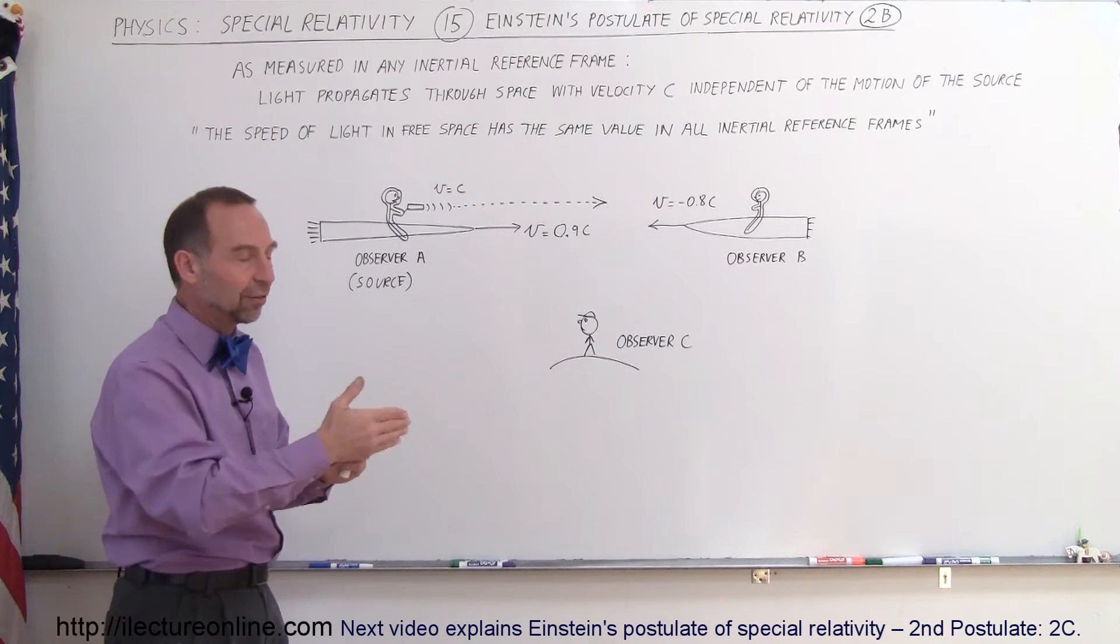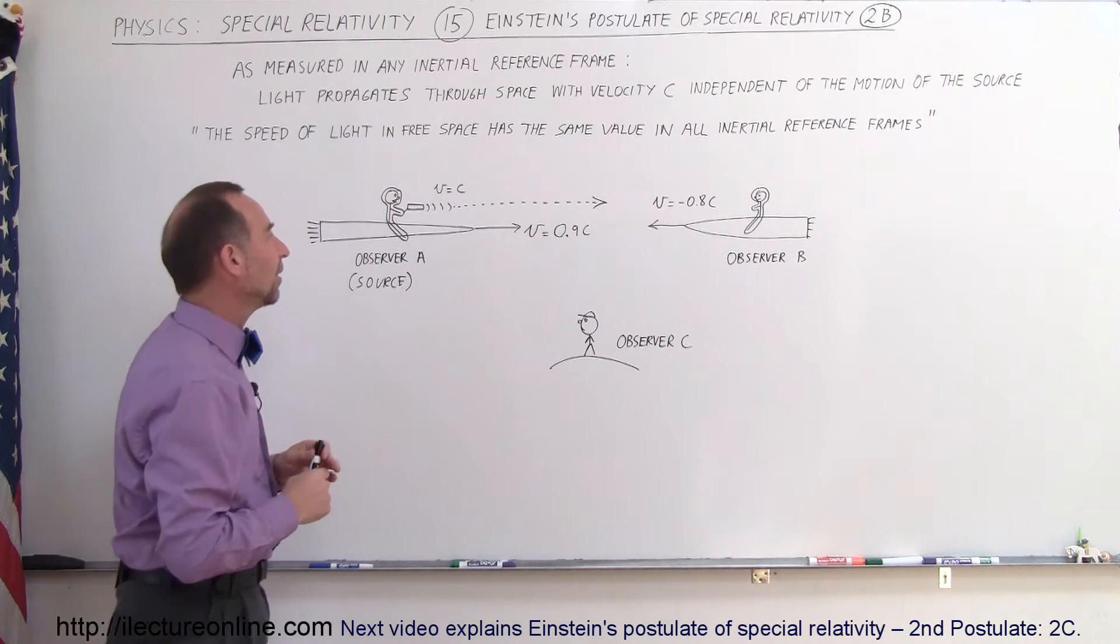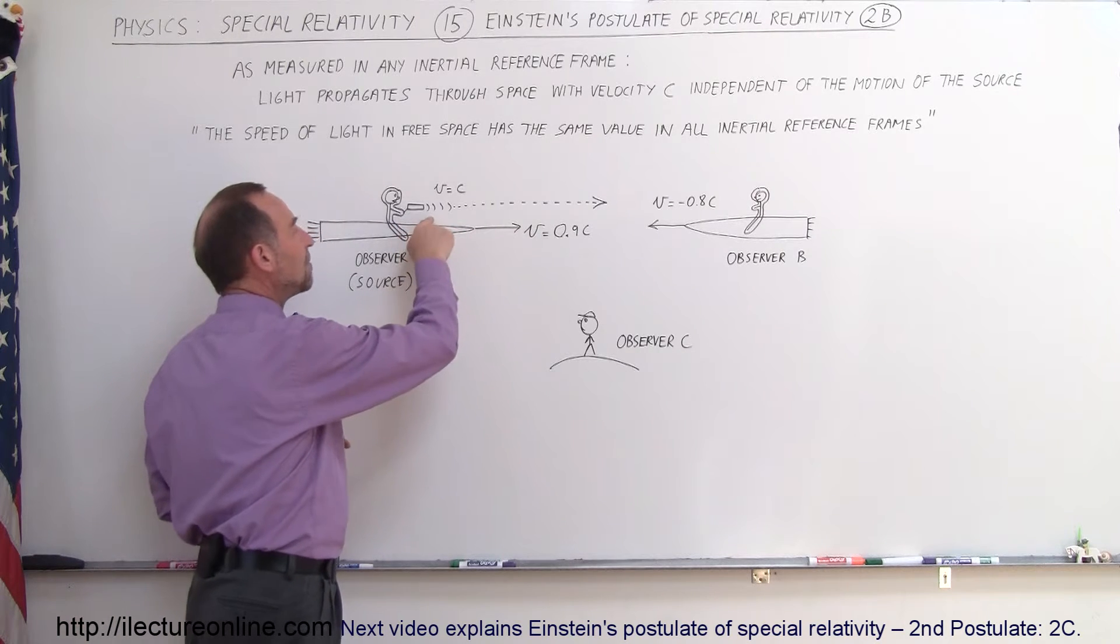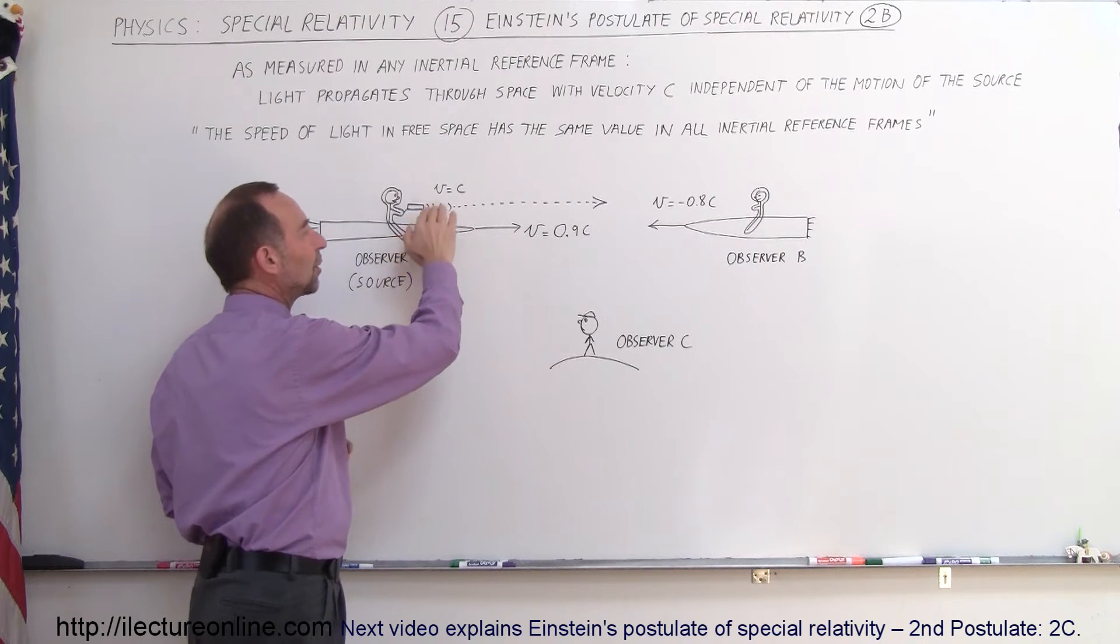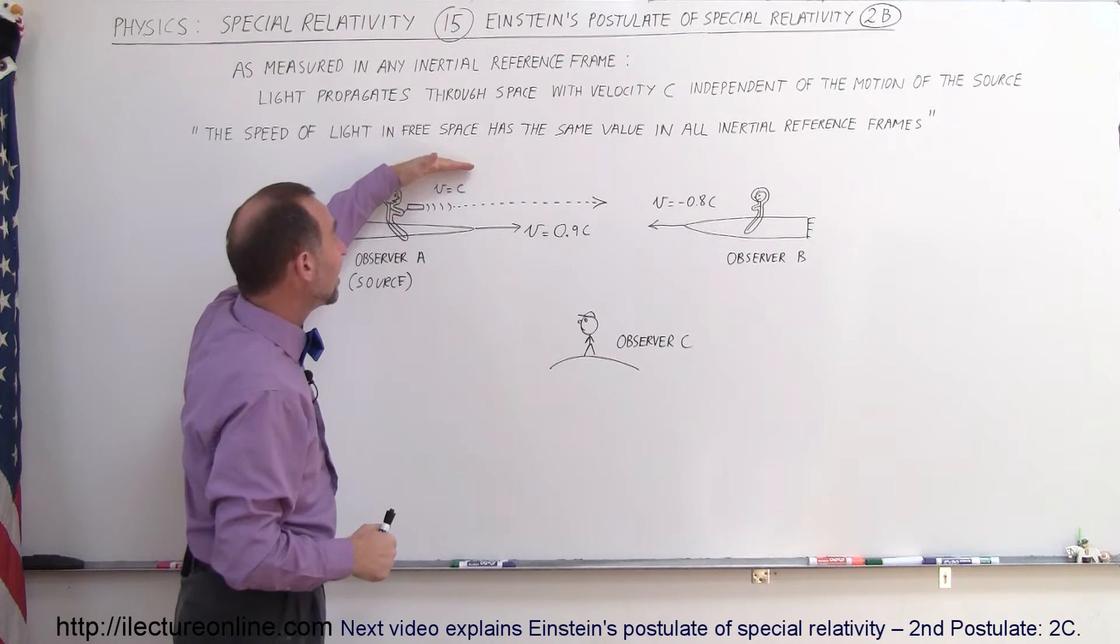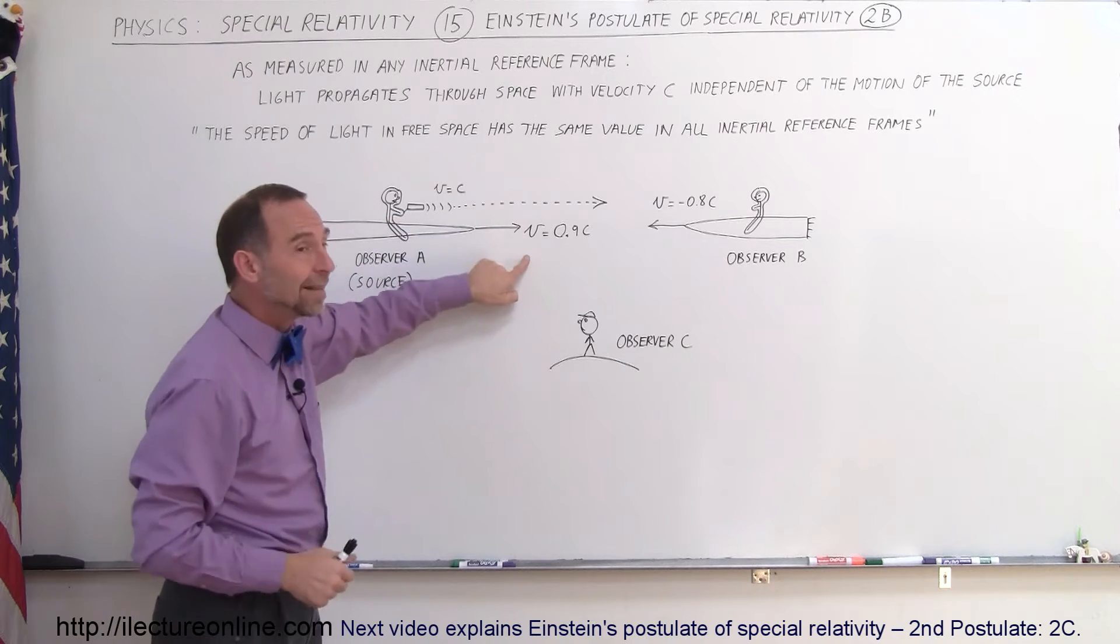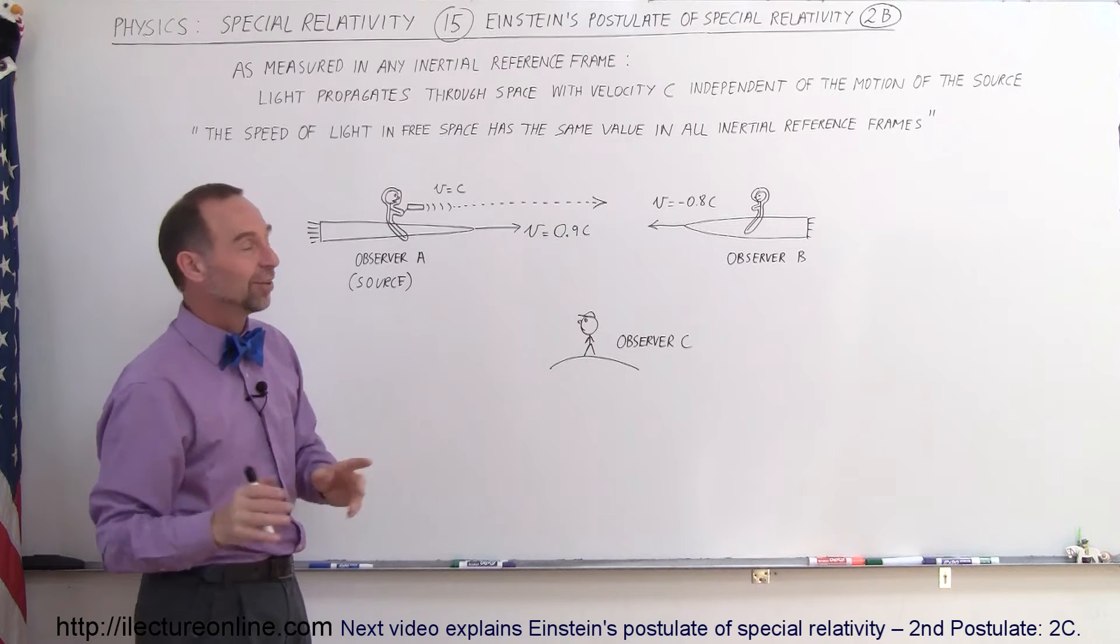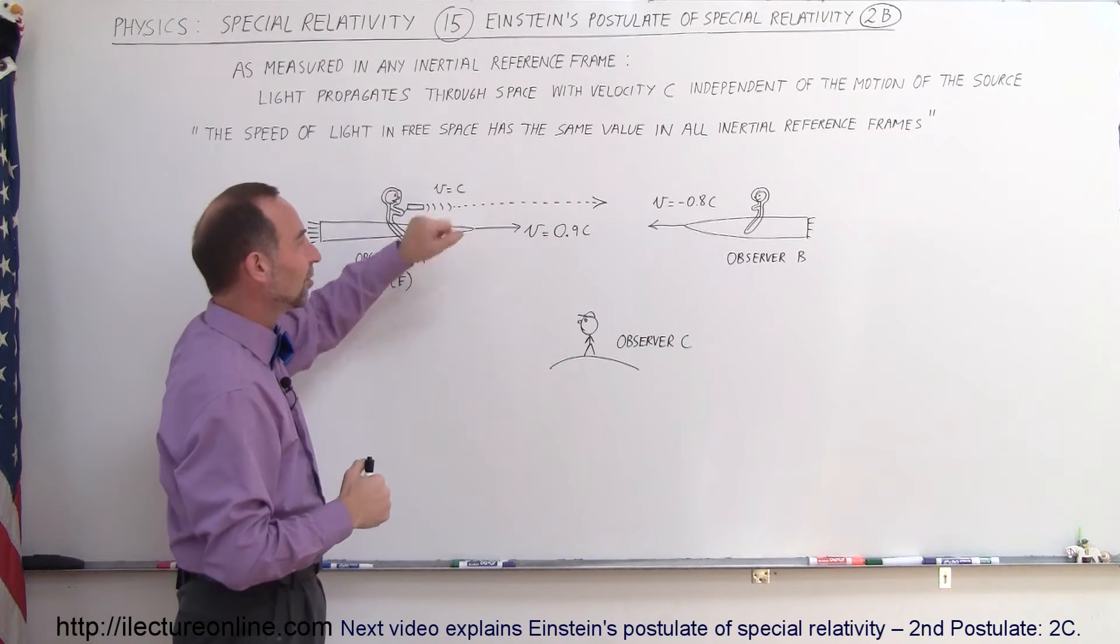Of course, as soon as the light leaves the flashlight, it moves outward at the speed of light. But since he's already moving at 0.9c, does that mean that the speed of light is now moving at 1.9c? Or does that mean that the speed of light is moving at c, and since he's moving at 0.9c, the light is just barely getting away from him at 0.1c? Well, 0.1c is still pretty fast, but it would be much slower than c.